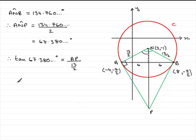So to get AP, all I need to do is multiply both sides by 13 over 2. So you've got 13 over 2 multiplied by the tan of 67.380 and so on degrees. Now if you do this on your calculator, what you get is exactly 15.6.